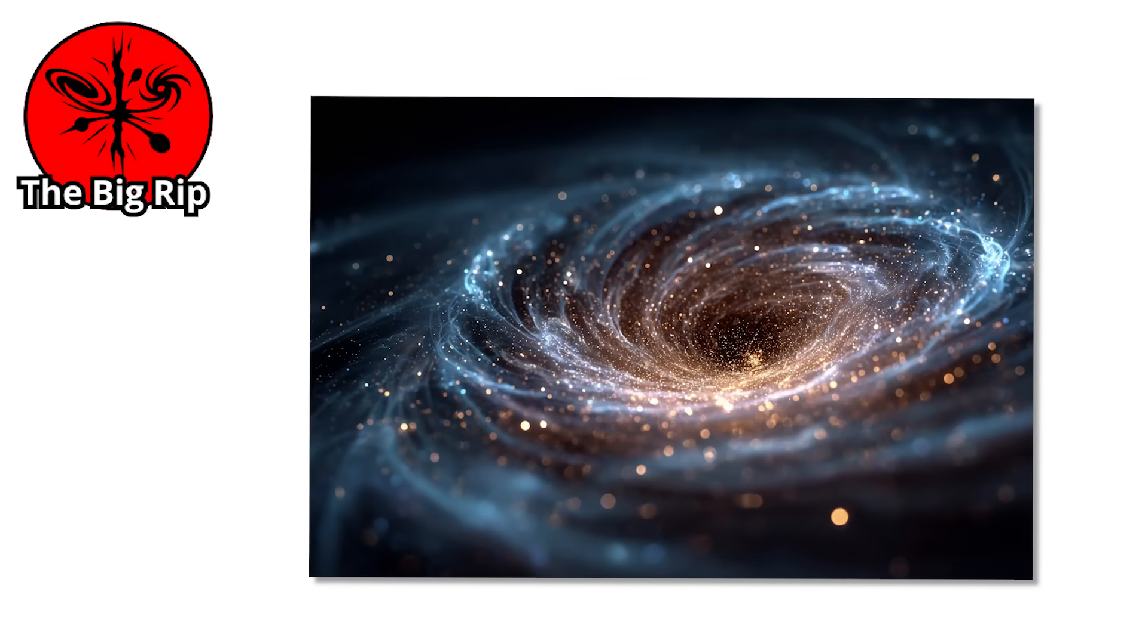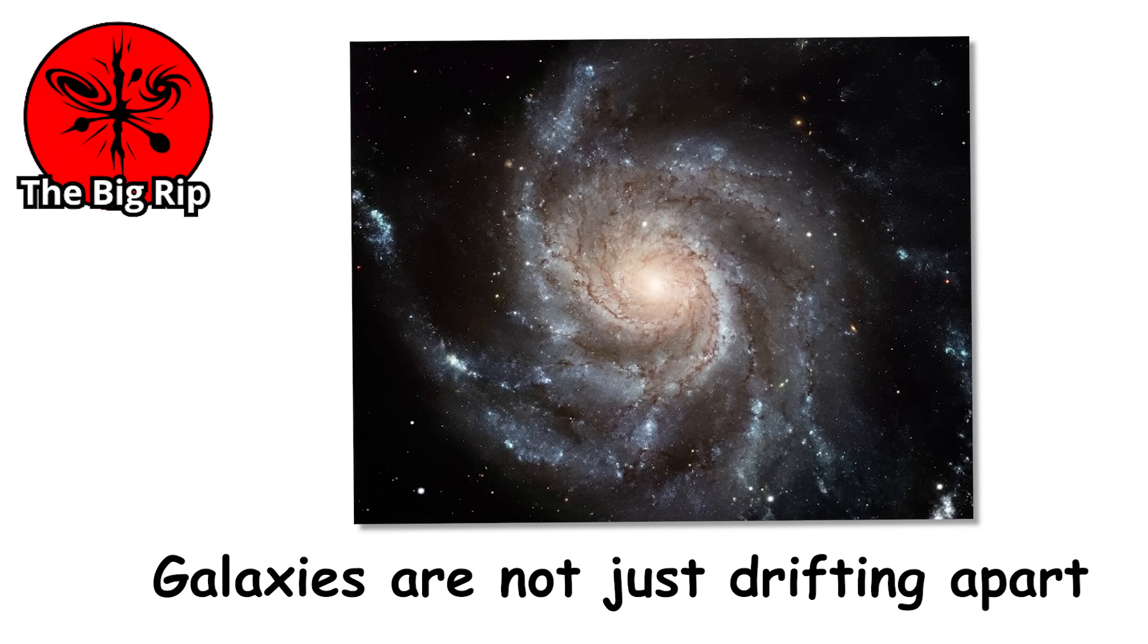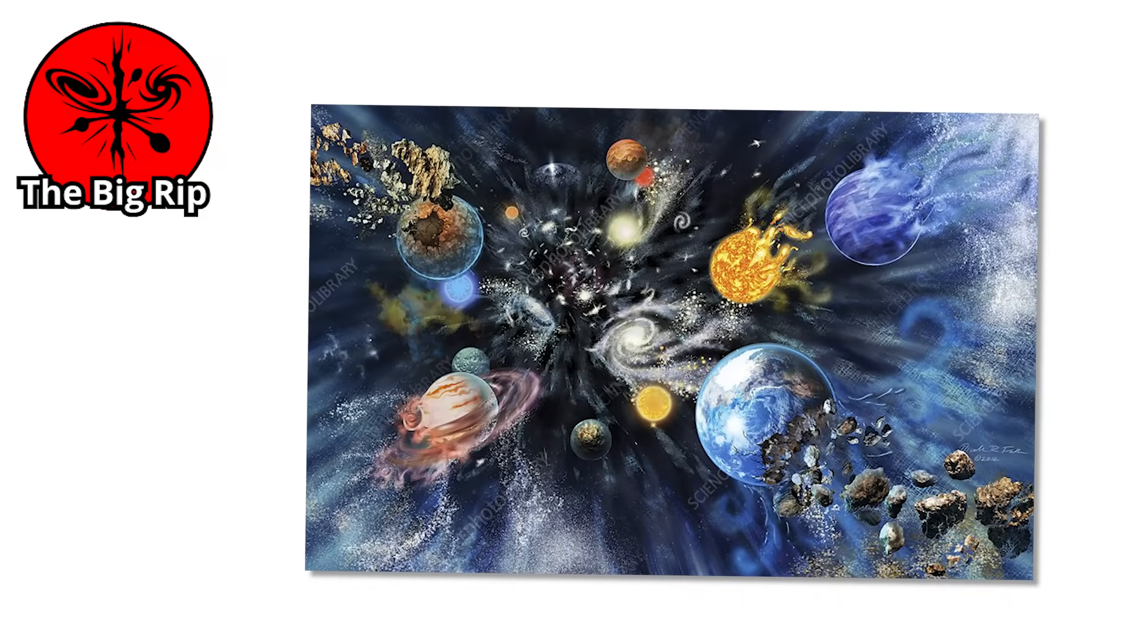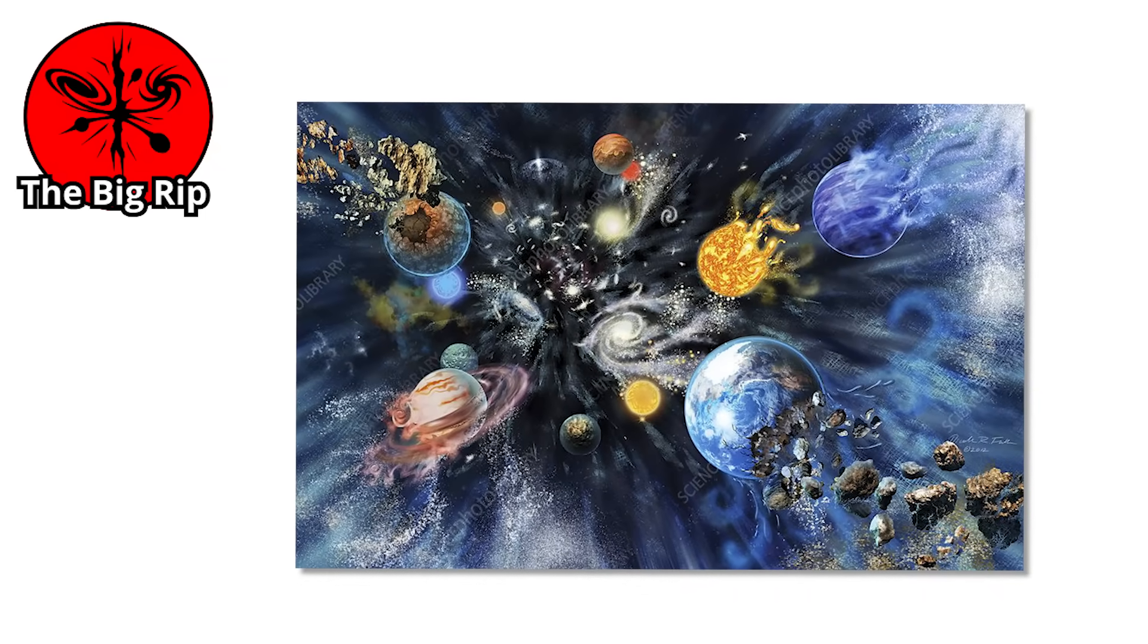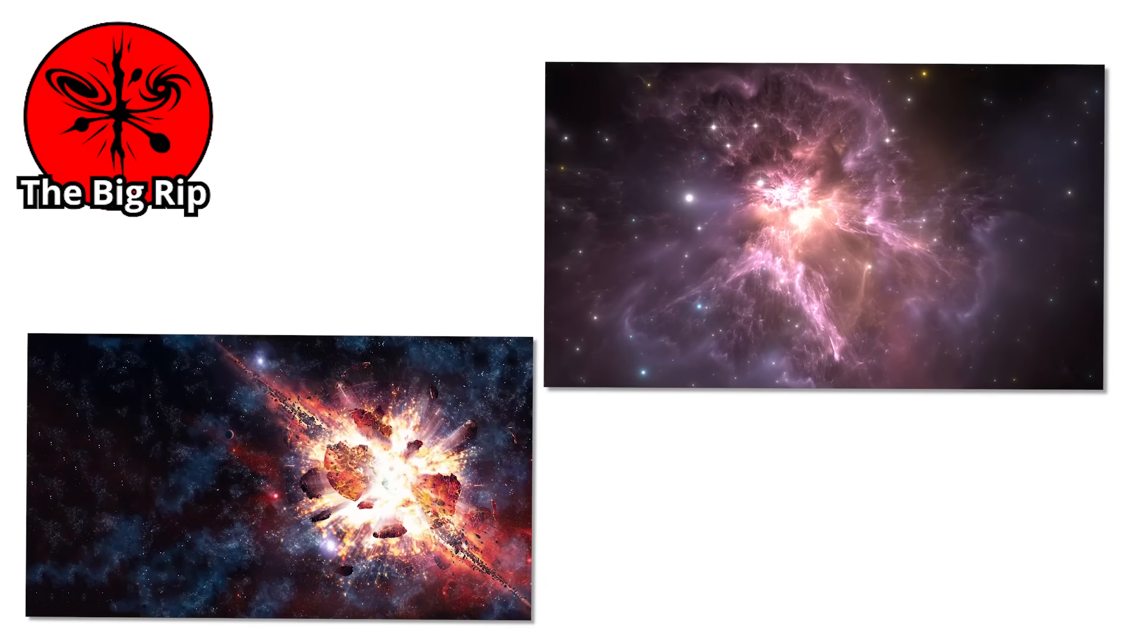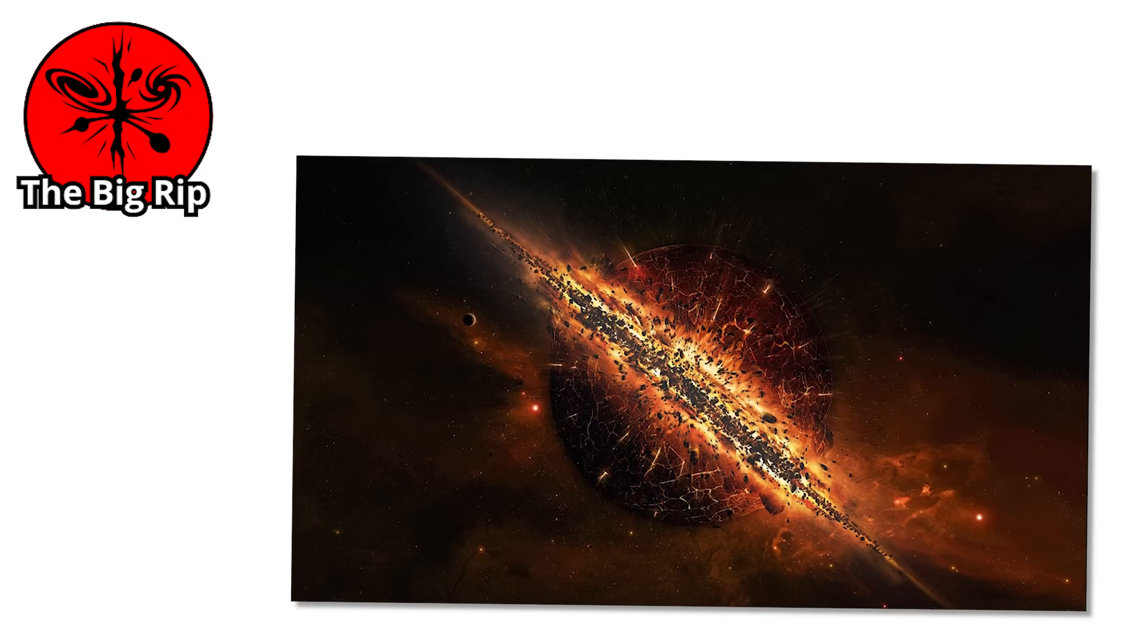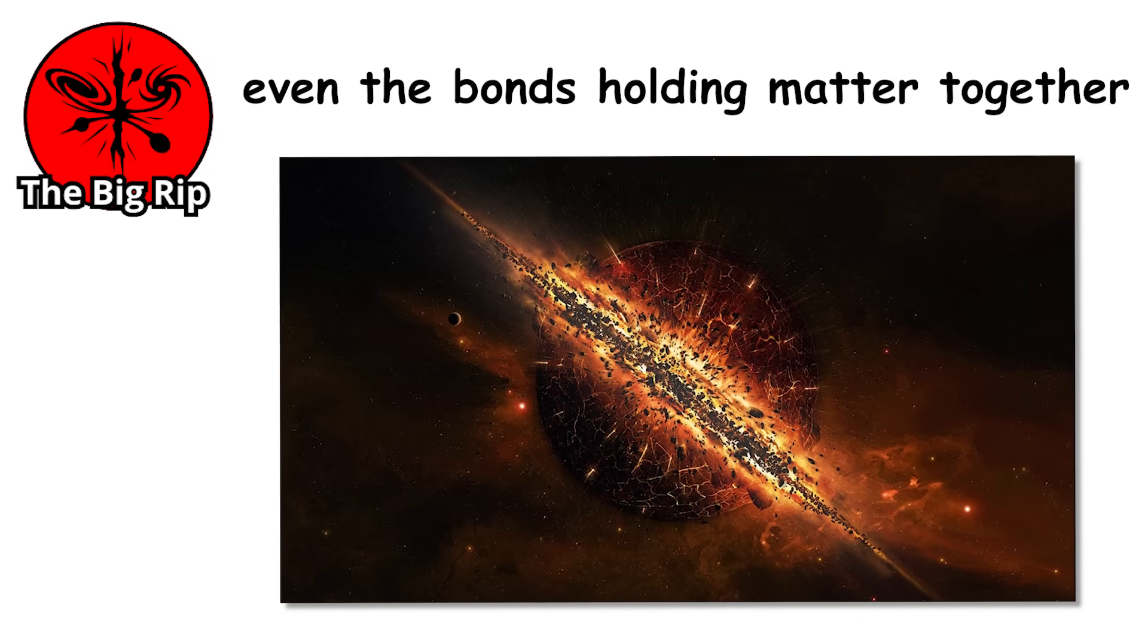To understand the Big Rip, we need to talk about dark energy. This mysterious force is causing the universe to expand faster and faster. Galaxies are not just drifting apart, they are accelerating away from each other. For a long time, scientists thought this expansion might slow down or stay steady. But what if it keeps speeding up? What if dark energy grows stronger over time? In the Big Rip scenario, dark energy eventually becomes so powerful that it overcomes gravity, atomic forces, and even the bonds holding matter together.